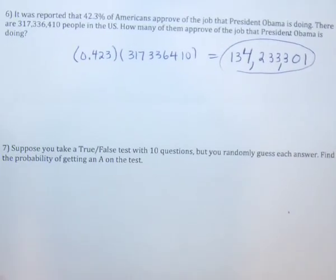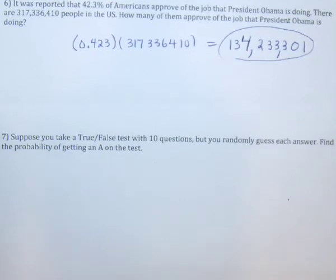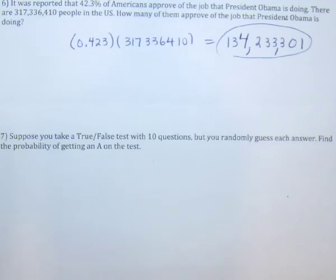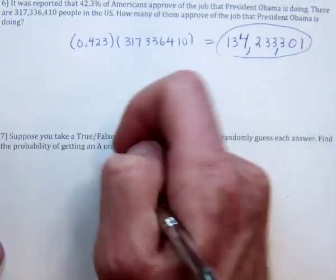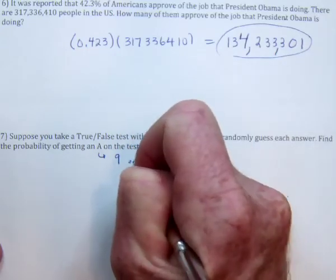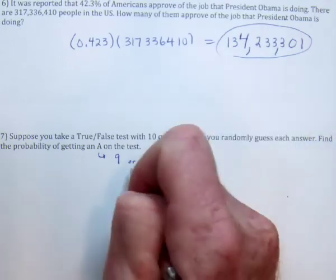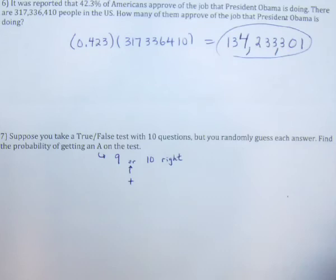For number 7: you take a true-false test — maybe in some biology class — there are 10 questions and you guess. Suppose just by guessing you're able to get an A. For an A, that means you get either 9 right (that's 90%) or all 10 right. There's the 'OR' again — it turns into a plus, so we do these as two cases. Maybe you got all 10 right — that would be a lucky guess — or maybe you got 9 right; we'll add them together.